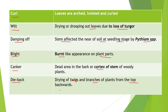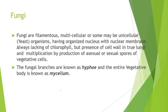Now we begin the unit on fungi. Fungi are filamentous, multicellular — or some may be unicellular like yeast — with an organized nucleus and nuclear membrane, always lacking chlorophyll but with a cell wall present in true fungi. Multiplication occurs by production of asexual or sexual spores. Fungal branches are known as hyphae and the entire vegetative body is known as mycelium.